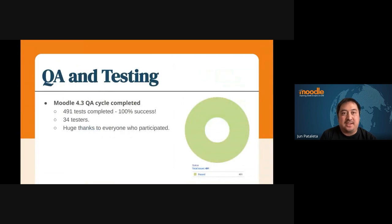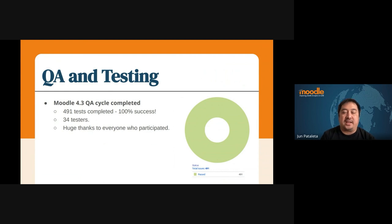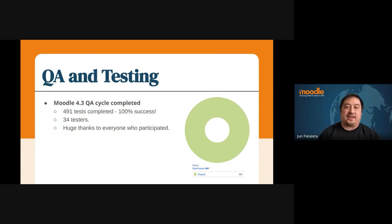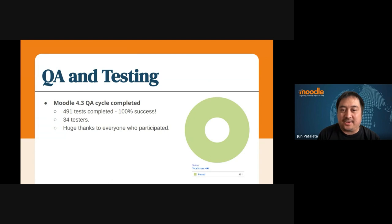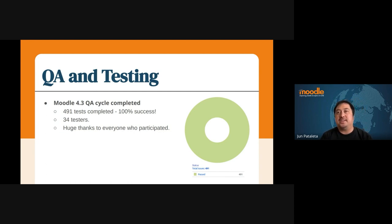I'll be presenting on behalf of CIMI. During these past four weeks, we also had a very busy QA cycle, where we had 491 tests completed. 34 testers helped participate in the QA tests, and 414 of these issues were tested by the community, which amounts to about 84% of the numbers.